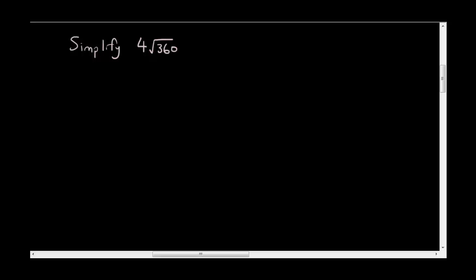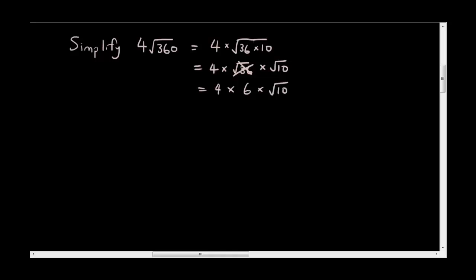Let's do the next example. We have to simplify 4 times the square root of 360. What I'm going to do is firstly rewrite the number inside the square root sign as 36 times 10, and I'm going to break it up into 2 surds: square root of 36 times square root of 10. The square root of 36 is equal to 6, so I rewrite that as 4 times 6 times square root of 10, which gives 24 times square root of 10. There's no way to simplify 10 any further, because you can't find two numbers that multiply to give 10 where one is a square number.